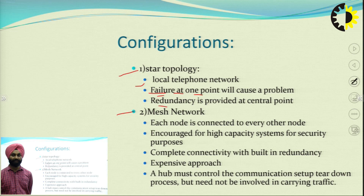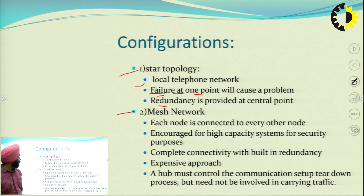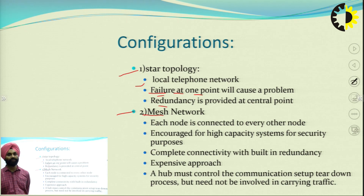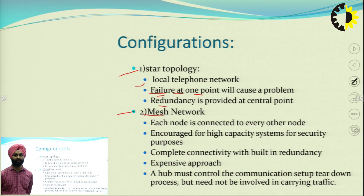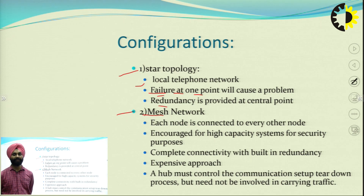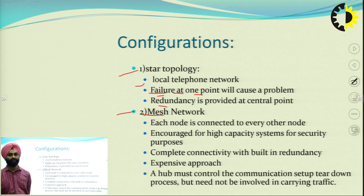Generally, redundancy is provided at the network. The mesh network is a network where all the nodes are connected with each other. There may be satellites communicating with a number of other ground stations, and ground stations are also communicating with each other. For example, in the case of GPS, the mesh network topology is used.